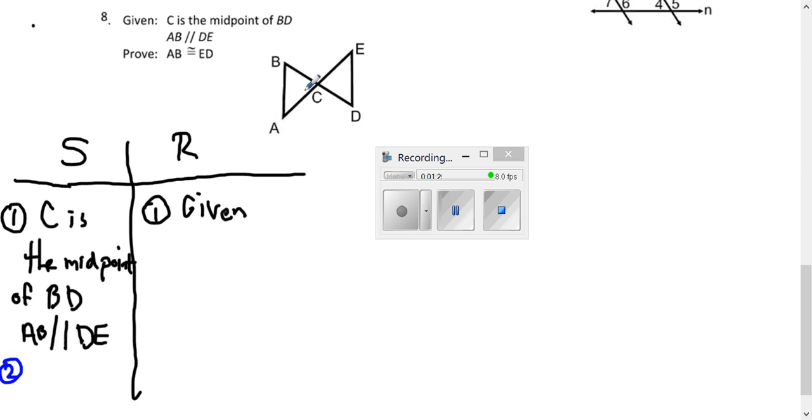When you have vertical angles, a lot of times my students have a hard time with remembering how to use the three letters. So I just teach them to rename the angles. Just call it angle one and two. So angle one is congruent to angle two. Why? Because vertical angles are congruent.